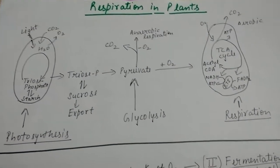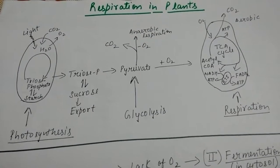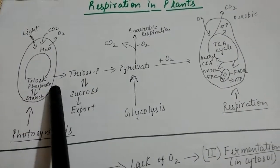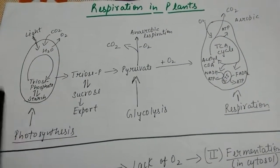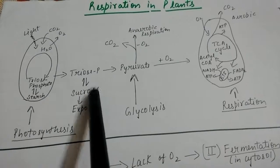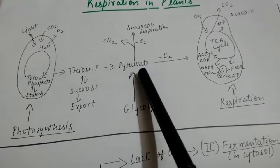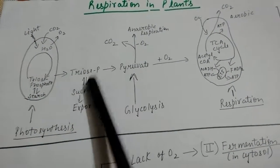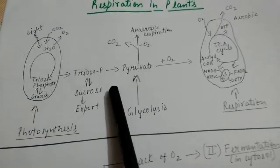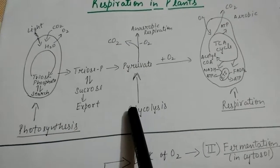We can understand the various processes of respiration with the help of a simple diagram. The process of photosynthesis leads to the formation of triose phosphate, that is starch. This triose phosphate is either converted into sucrose and exported in plants for utilization, or it is converted into pyruvic acid. The sucrose, being a disaccharide, is converted into monosaccharides — glucose or fructose — to enter into glycolysis.